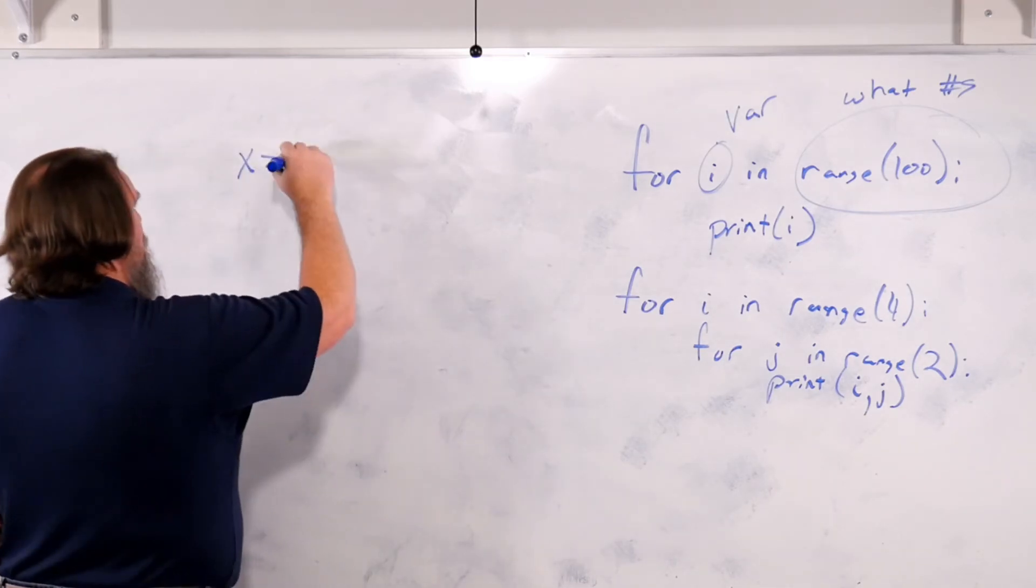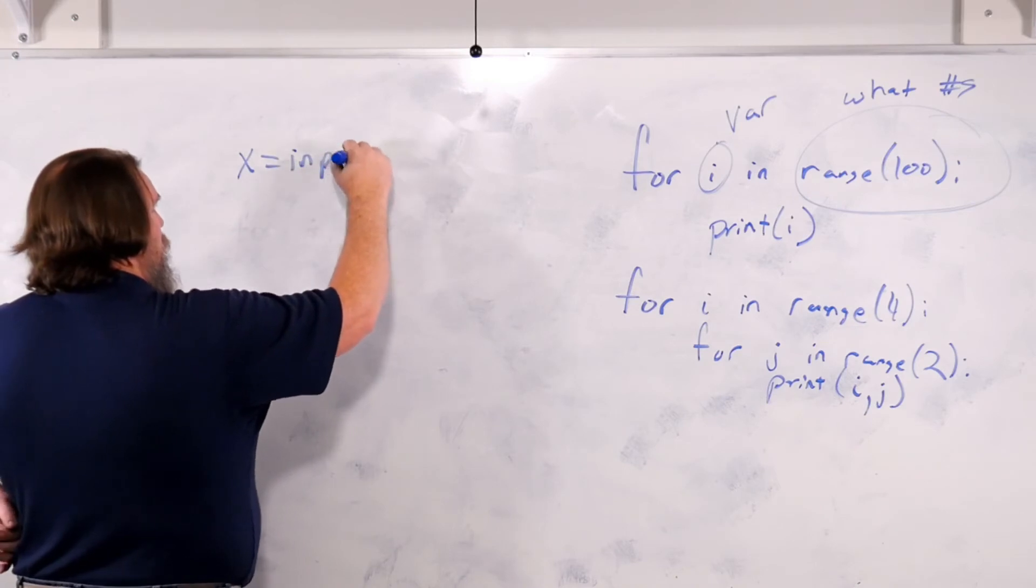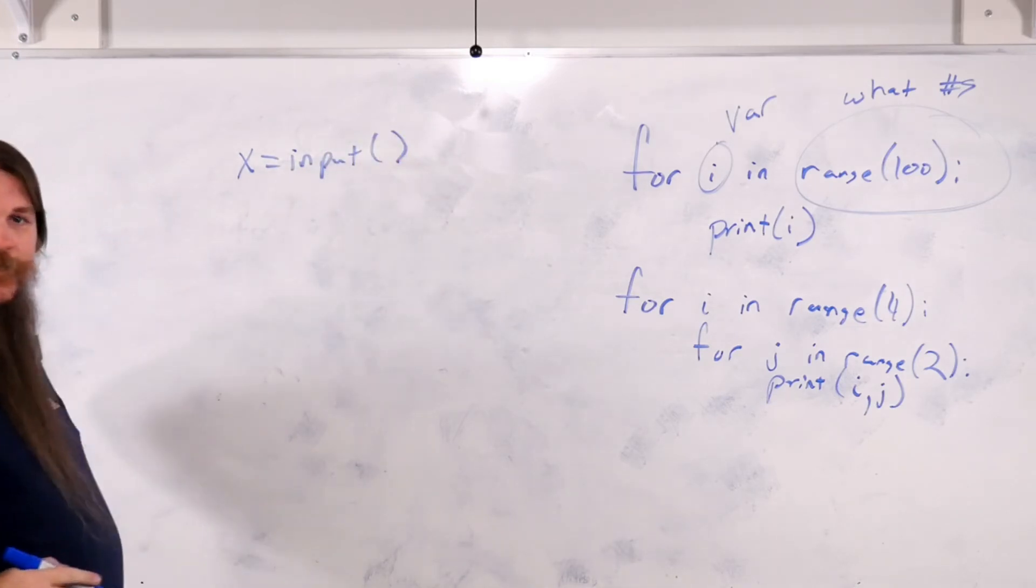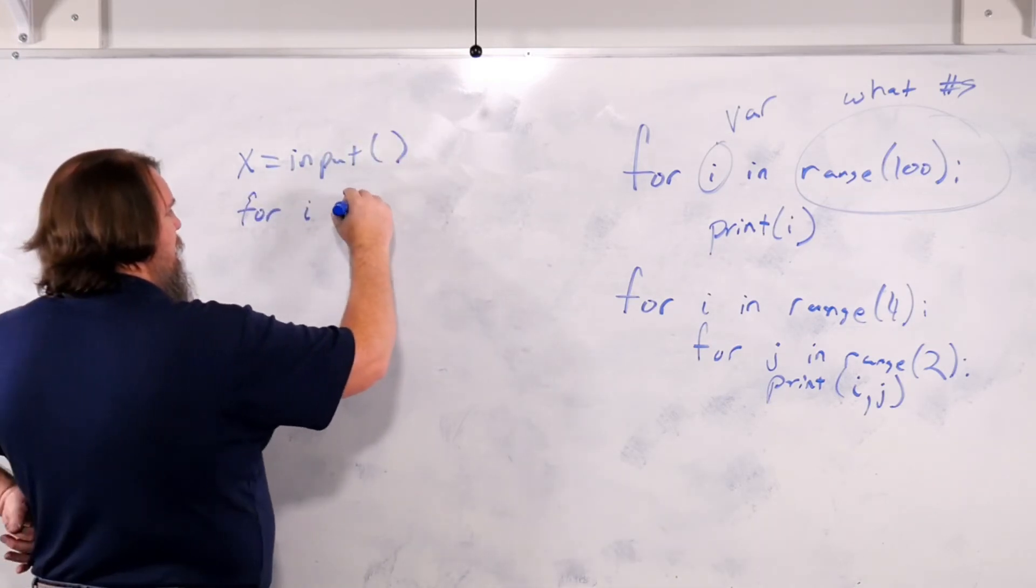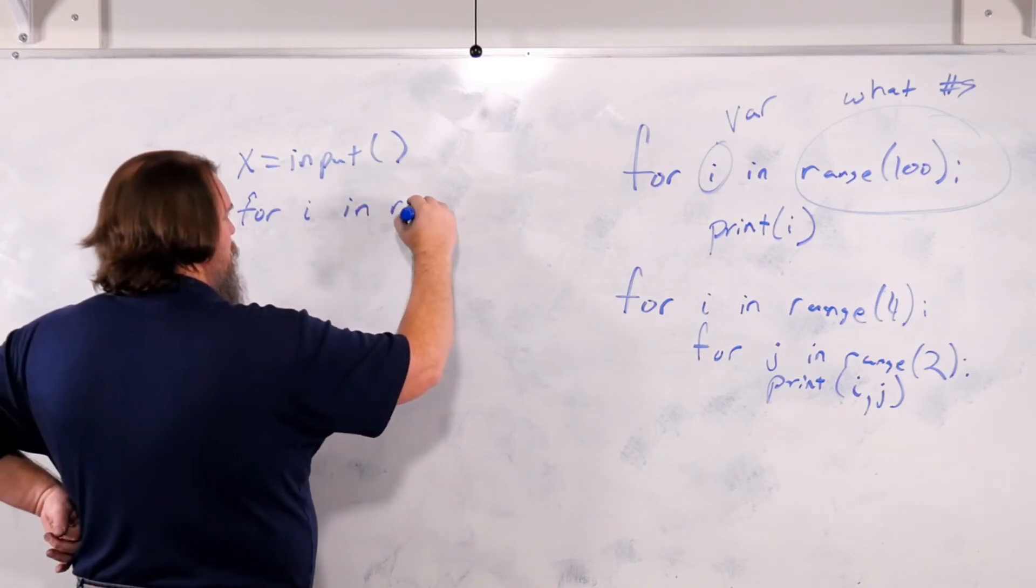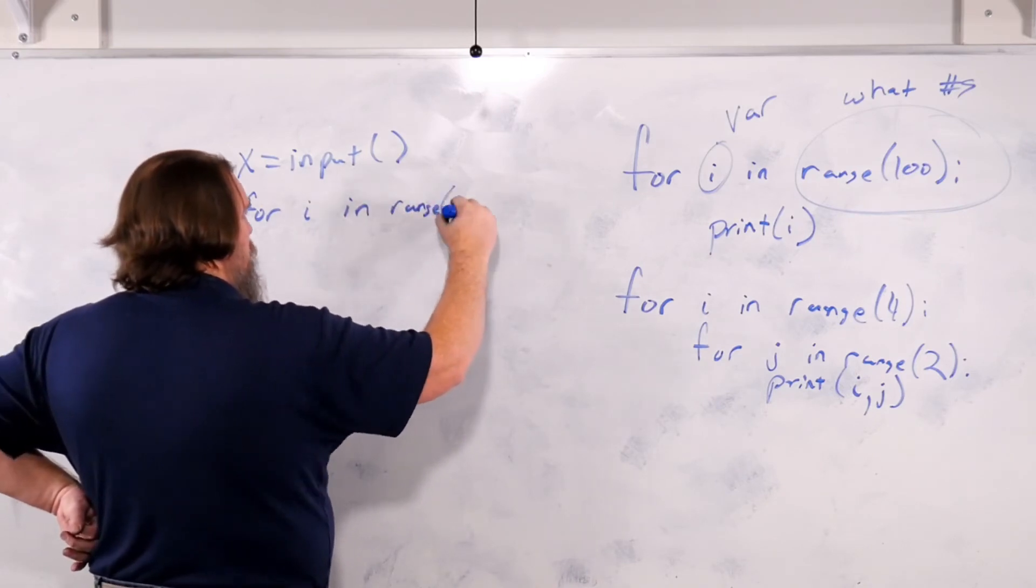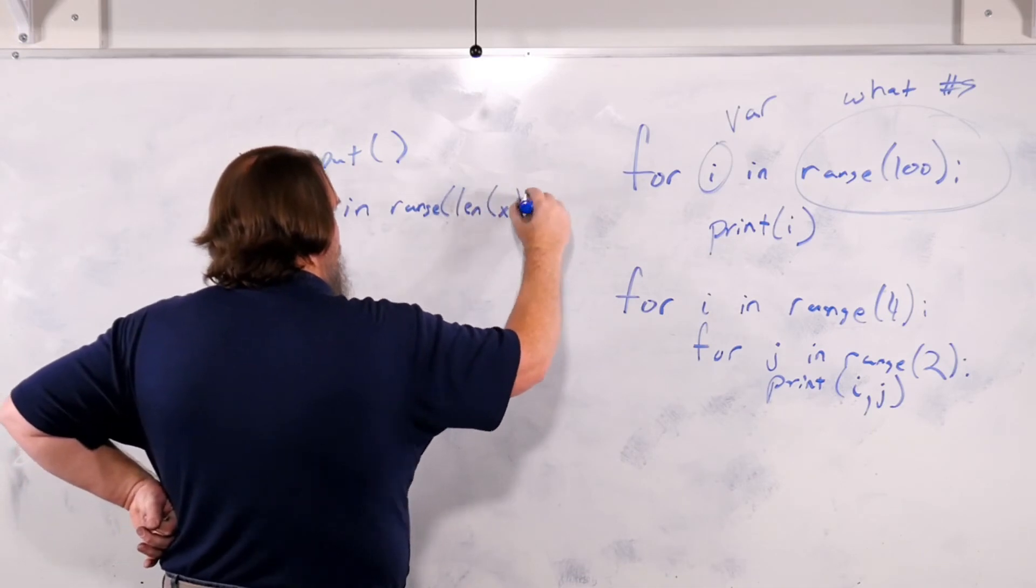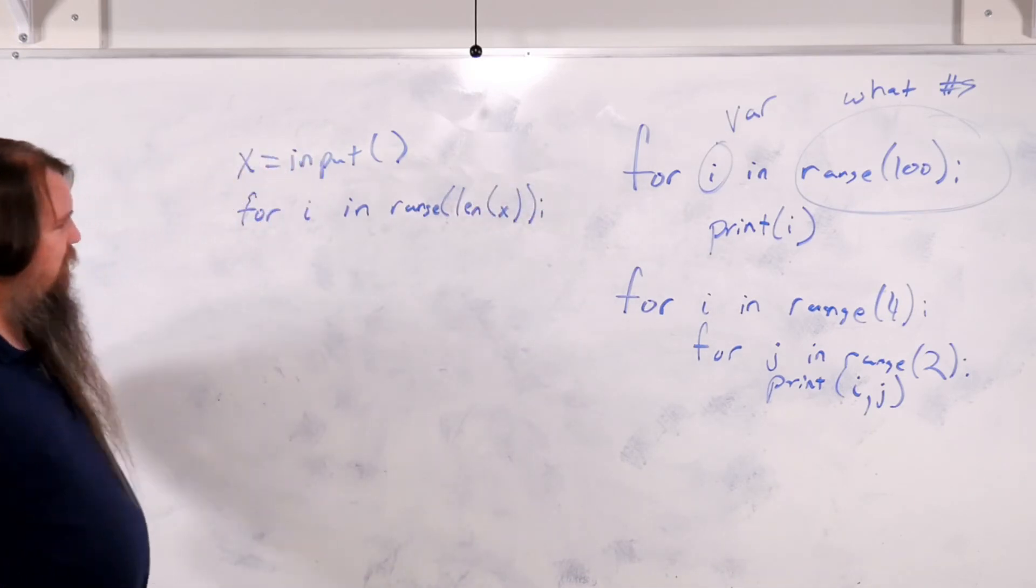Let's have x equals input. I'm going to read the input from the user for i in range len x. What's that going to do?